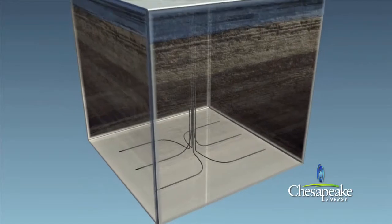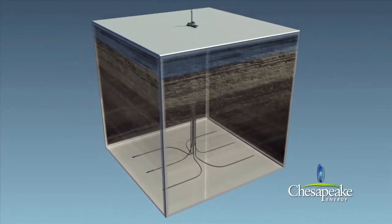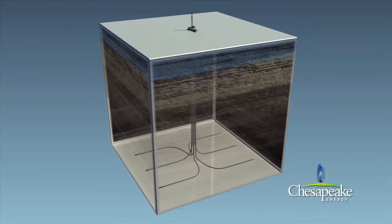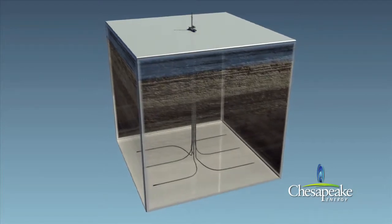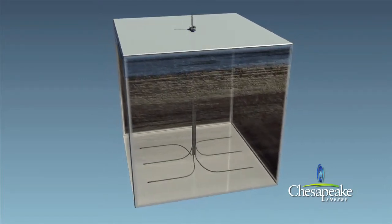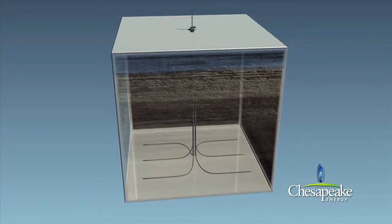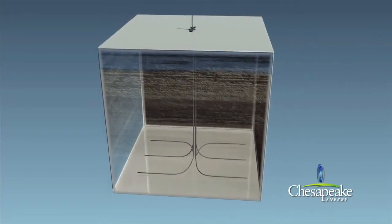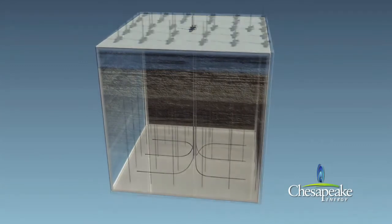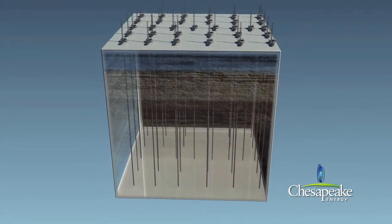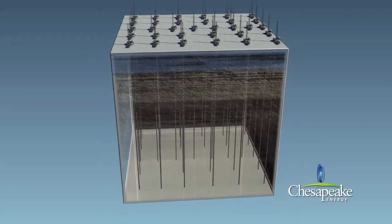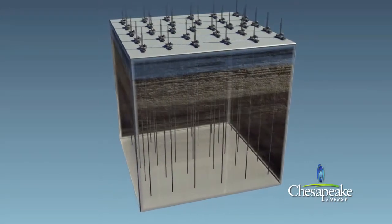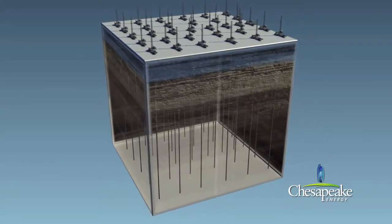Horizontal drilling offers many advantages when compared to vertical drilling. Since horizontal wells contact more of the gas-producing shale, fewer wells are needed to optimally develop a gas field. Multiple wells can be drilled from the same pad sites. For example, development of a 1,280-acre tract of land using conventional vertical drilling techniques could require as many as 32 vertical wells, each having its own pad site.